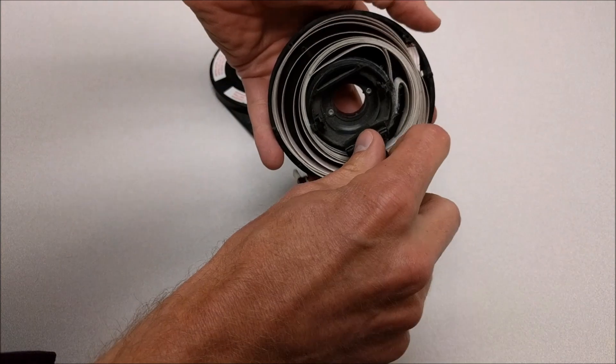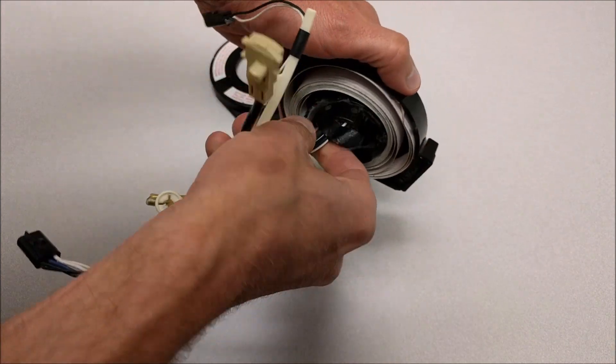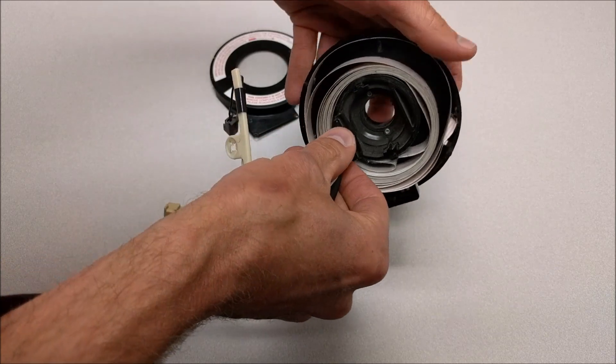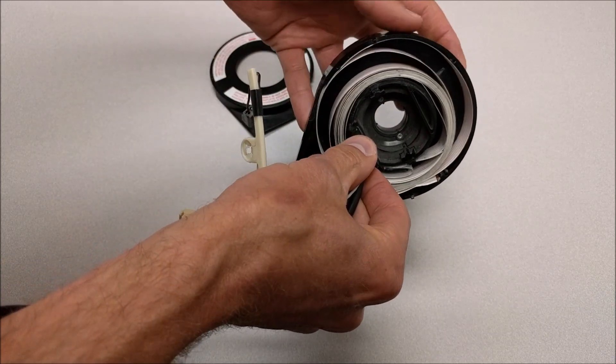You'll see as it rotates, that ribbon actually slides on itself and coils and winds up. It can rotate quite a ways before it would become tight and break.